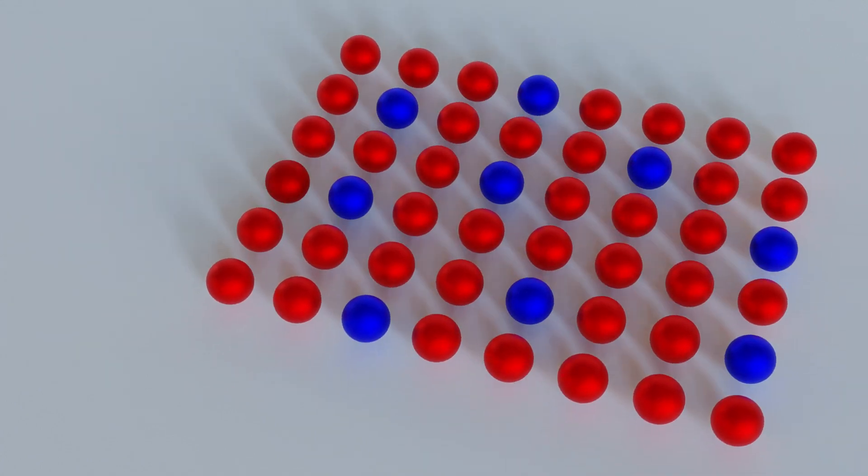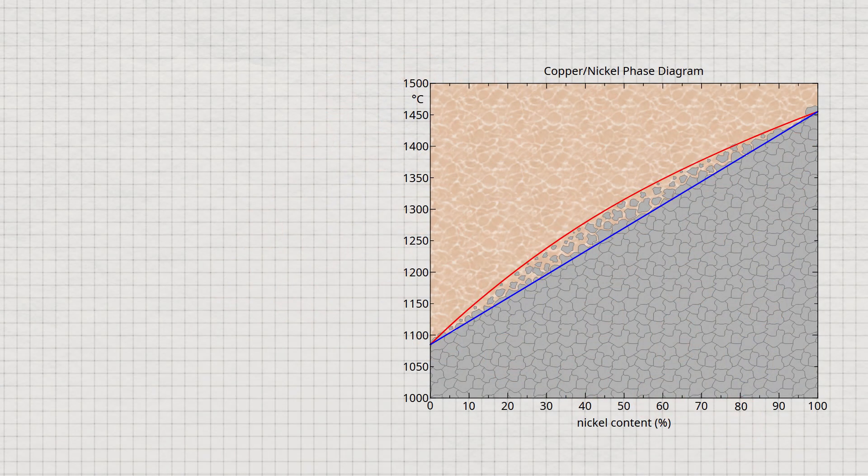As an example of such a solid solution alloy, the copper-nickel alloy system has been considered, which shows a complete solid solution series over the entire alloy system.